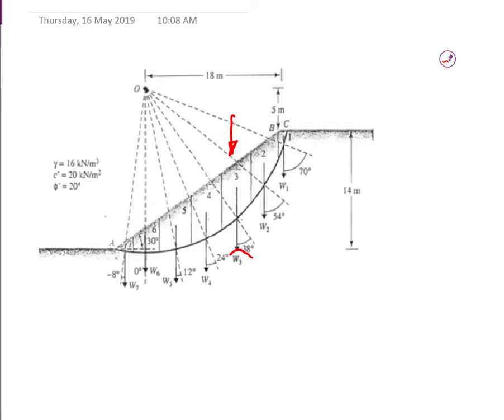It has a weight, W3, and obviously we can calculate that from gamma. And it has an angle here at 38 degrees to the vertical.